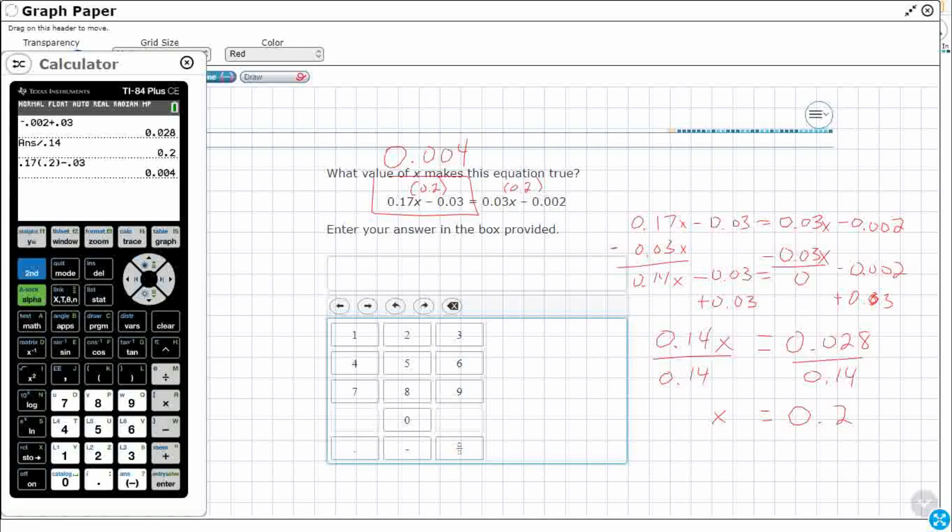Let's see what happens if I do that on the other side. I'm going to get 0.03. And then, let's multiply that by 0.02. That's what I think my x is. And then, I'm going to subtract 0.002. And look at that. 0.004. So, my x equals 0.2 works.